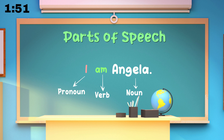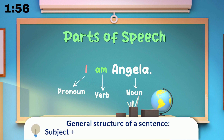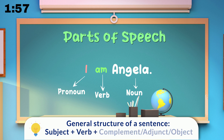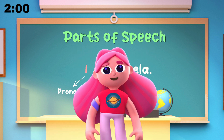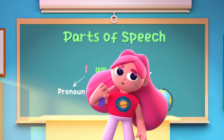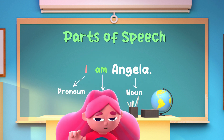You have got a bonus in this lesson. In English, a sentence always starts with a subject, then a verb, and then other parts such as complement, adjunct, or object. These are tough words, but don't worry — we will go through all the lessons to cover the unknown and unseen.